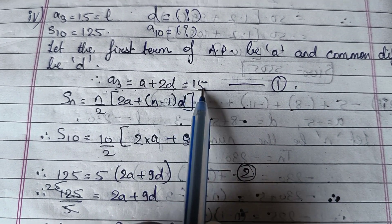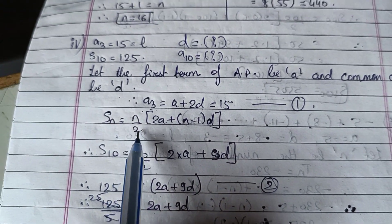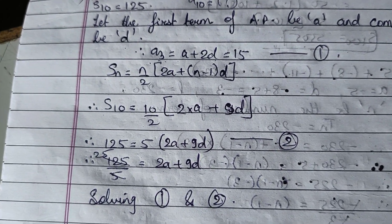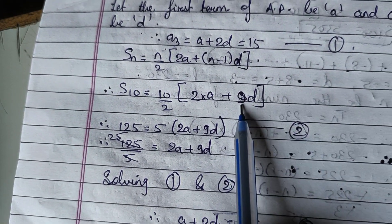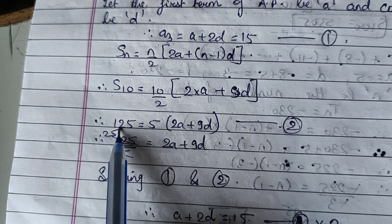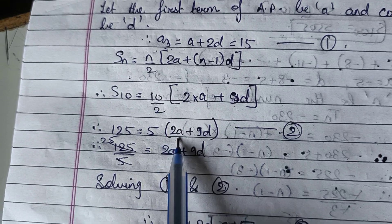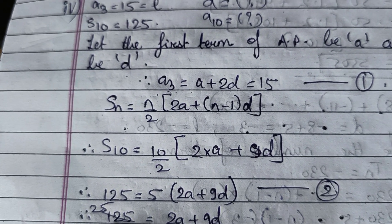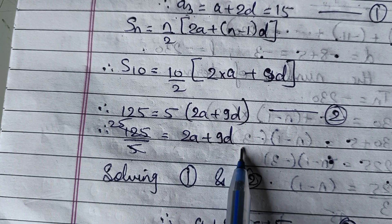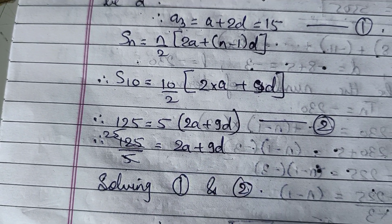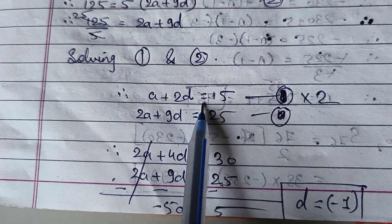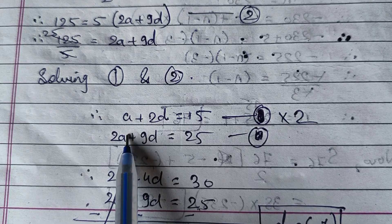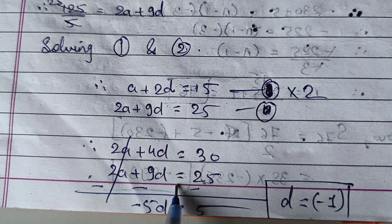For S10 using Sn = n/2 × (2A + (n−1)D): S10 = 10/2 × (2A + 9D) = 5 × (2A + 9D). Since S10 = 125, we get 125/5 = 2A + 9D, so 25 = 2A + 9D — this is Equation 2. Multiplying Equation 1 by 2: 2A + 4D = 30.